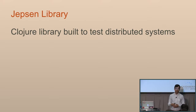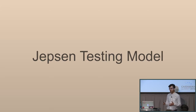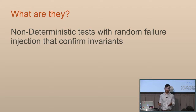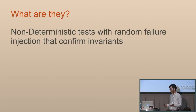Jepsen is a Clojure library which provides tools to test distributed systems. Getting into the meat of the Jepsen testing model: what is a Jepsen test, and why are these so good at catching bugs in distributed systems that have big companies behind them and dozens of engineers working hard to prevent them — and yet the bugs are happening anyway?